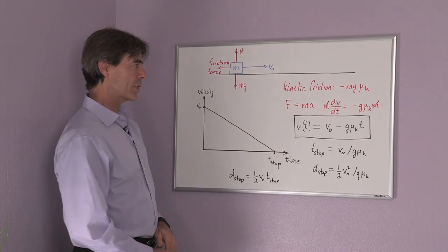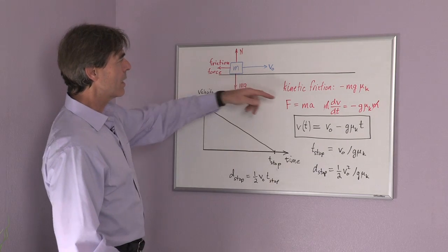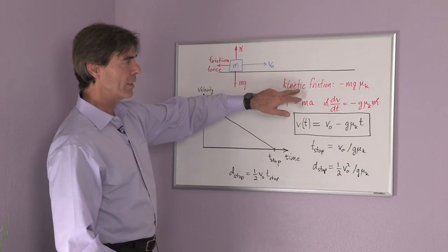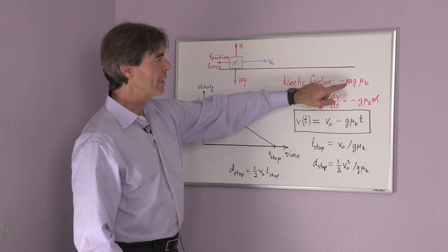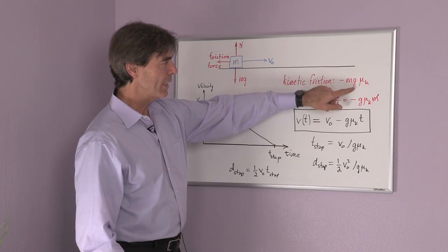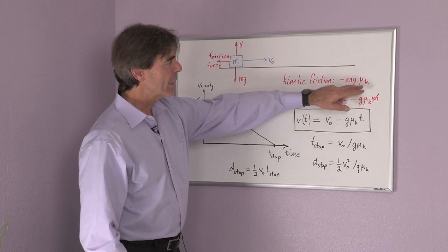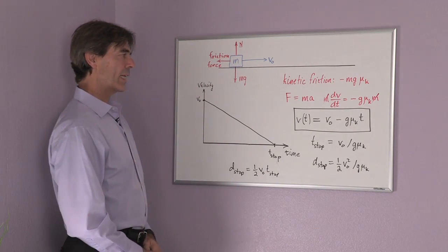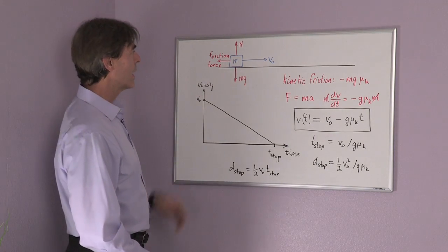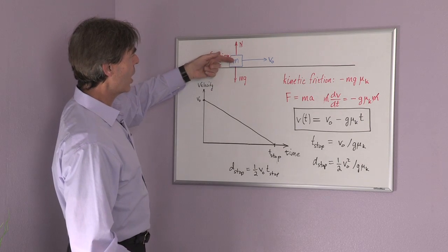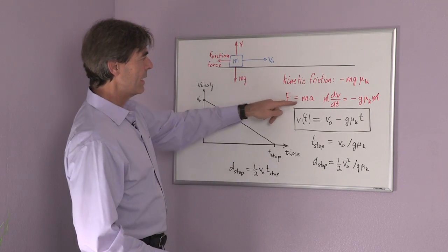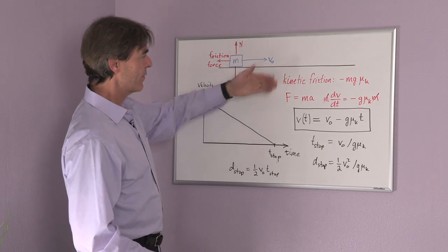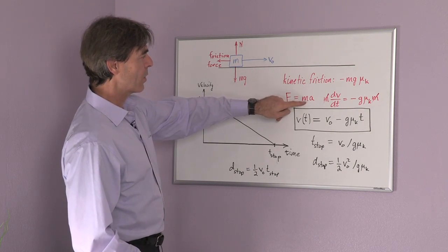The frictional force is trying to slow this object down, and so we use the formula for kinetic friction, which means that this frictional force is equal to minus the mass times g, that's the normal force, times the coefficient of kinetic friction. So the object will slow down because of friction, and the acceleration from friction would result in a decrease in velocity.